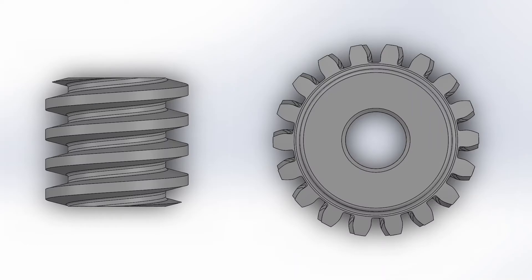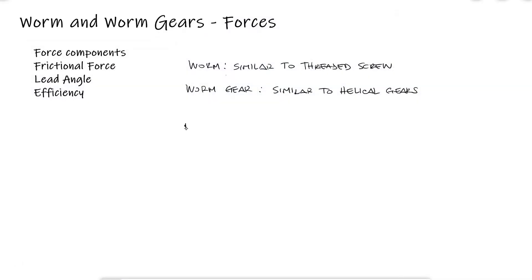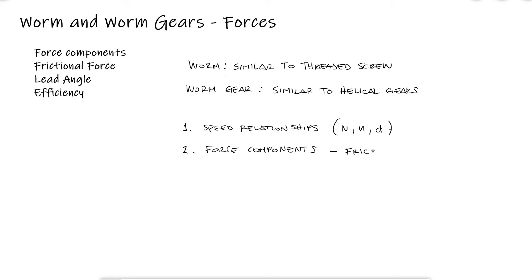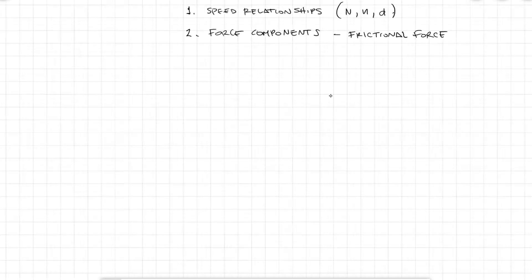In today's video we will look at the relationship between worm and worm gear speeds, number of teeth, and pitch diameters, and we will focus on how to find the components of the interaction forces between the worm and the worm gear, with one of the main differences being the presence of a friction force.